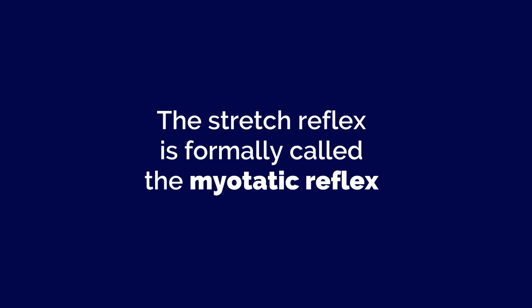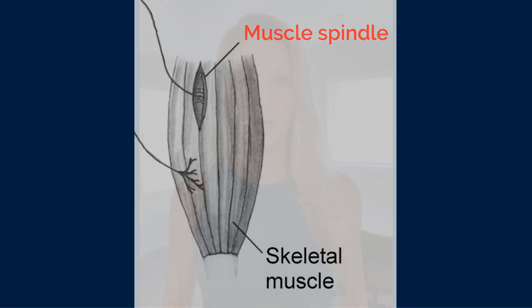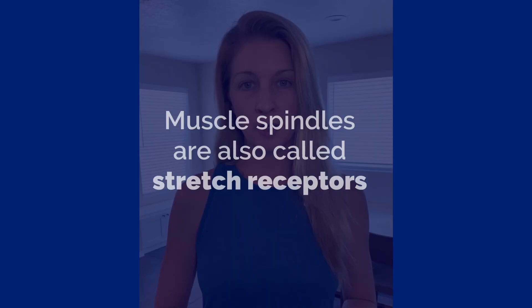The stretch reflex is formally called the myotatic reflex. Here's a simple drawing of a muscle. Inside our skeletal muscles are sensory receptors called muscle spindles. Muscle spindles detect changes in the length of our muscles, so for this reason they're also referred to as stretch receptors. When one of your skeletal muscles is stretched — by you pulling on it, someone else pulling on it, or someone giving you a deep massage — the muscle spindles within that muscle are stretched too.